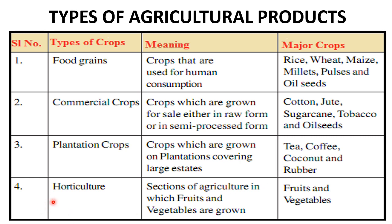Then comes horticulture — a section of agriculture in which fruits and vegetables are grown and cultivated. So that's all for today, thank you.